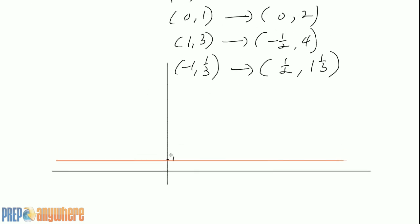(0, 2) is right here. And it becomes (-1/2, 4), so here's -1, and it goes up to 4: 1, 2, 3, 4.